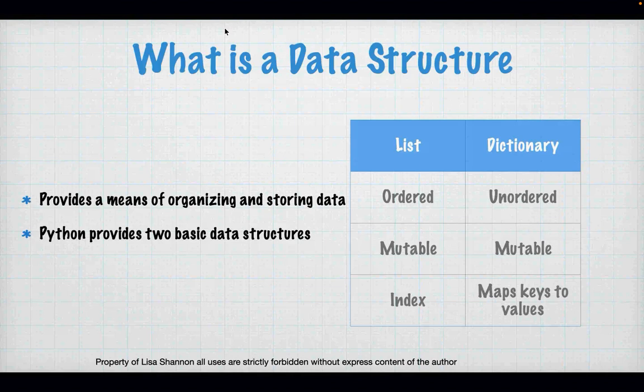A data structure is just a collection of stuff. It can be whatever stuff you want — rooms for a game, items for a game. Maybe you want to store weather data. You can group it together, and you can group it in two ways: one that is very basic but very fast, and another where you can imbue meaning to your data by how you set that structure up.